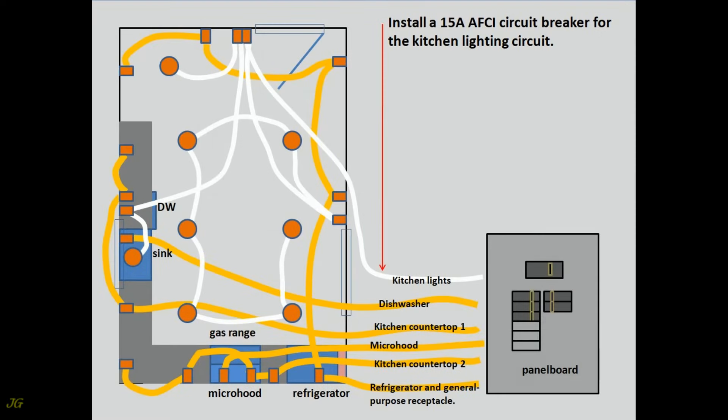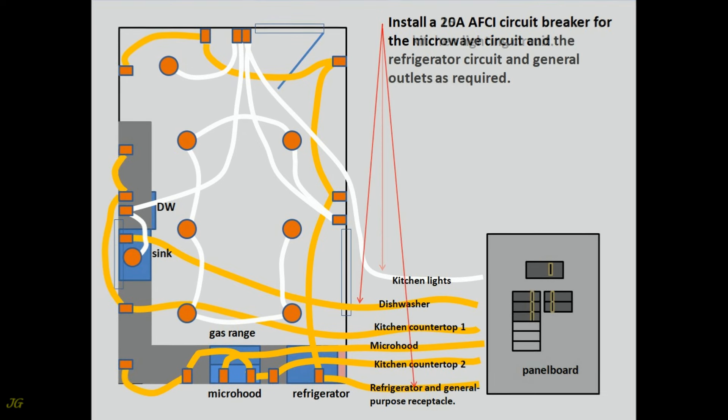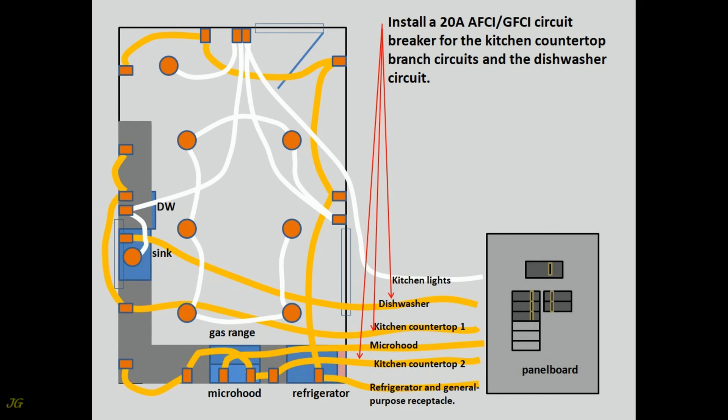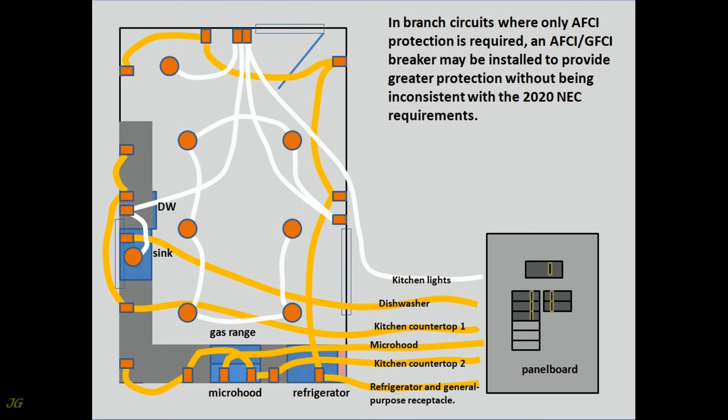Install a 15 amp AFCI circuit breaker for the kitchen lighting circuit. Install a 20 amp AFCI circuit breaker for the microwave circuit and the refrigerator circuit and general outlets as required. Install a 20 amp AFCI GFCI circuit breaker for the kitchen countertop branch circuits and the dishwasher circuit. In branch circuits where only AFCI protection is required, an AFCI GFCI breaker may be installed to provide greater protection without being inconsistent with the 2020 NEC requirements.